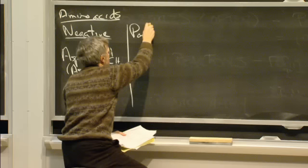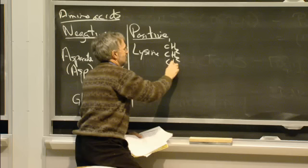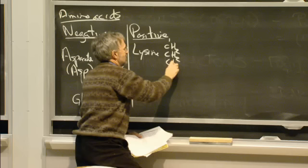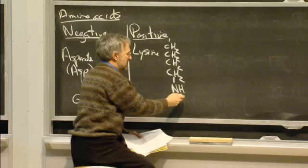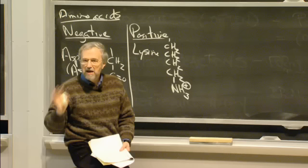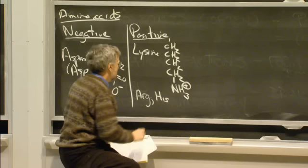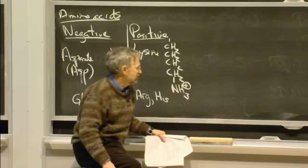There are positively charged amino acids. A good one to illustrate this is lysine, in which there are four methylene groups and then an amino group at the end. At pH 7, the kind of pH you find inside the cell, that amino group is going to get protonated, so it will have a positive charge. Arginine and, in most cases, histidine are examples of other amino acids that can have a positively charged group.